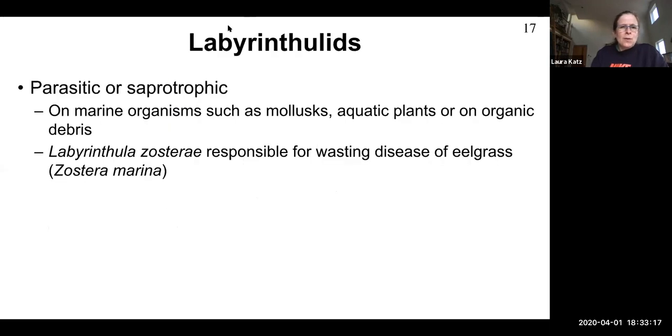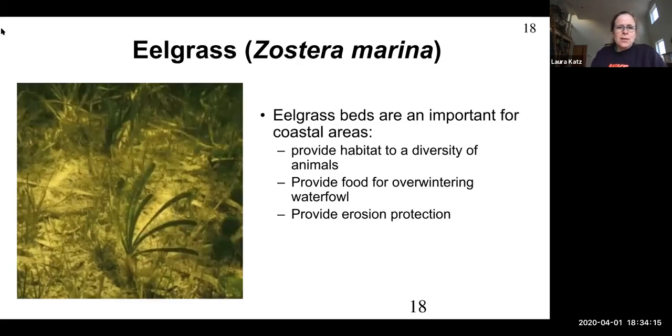I'm going to start by telling you just a few words about some of these groups. I'll start with the labyrintholids. So labyrintholids, ecologically, they're parasites or they're saprotrophic. Saprotrophic means that you eat dead things. And I think you might be uncomfortable to know that, in fact, humans are largely saprotrophic. When you go to the grocery store to buy carrots or your hamburger, those things are now deceased. And that's what we eat. These things are parasitic or they eat living things or they eat dead things. They are often found on marine organisms, including mollusks, but more importantly, aquatic plants.